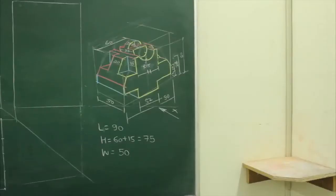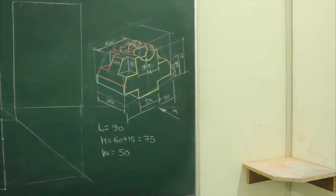In this sum, length is 90, height is 60 plus 15 and width is 50. Now first we will see the front view.